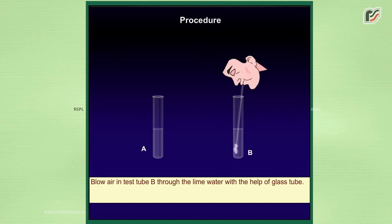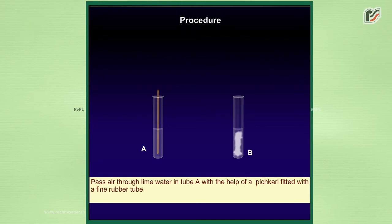Blow air in test tube B through the lime water with the help of glass tube. Pass air through lime water in tube A with the help of pichkari fitted with a fine rubber tube.